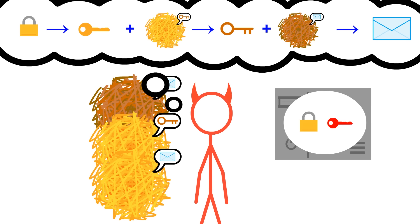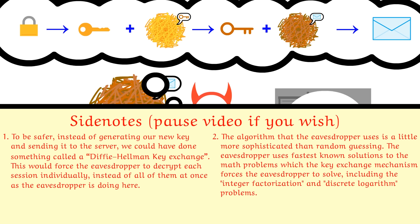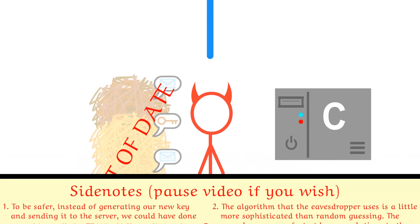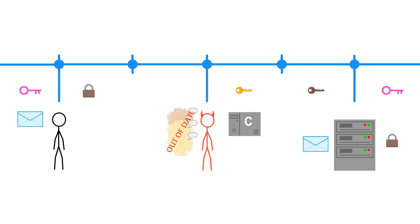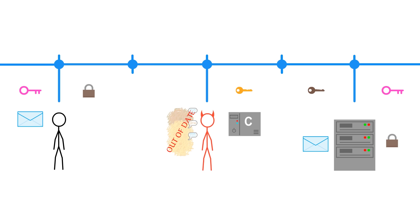This is done by guessing tons of potential private keys until a match is found. There are some shortcuts, but the math behind these keys is designed so that this would take forever anyway. Luckily, we change our locks faster than the eavesdropper can pick them. The fastest algorithms for doing this key reconstruction are just too slow to be of any practical use.